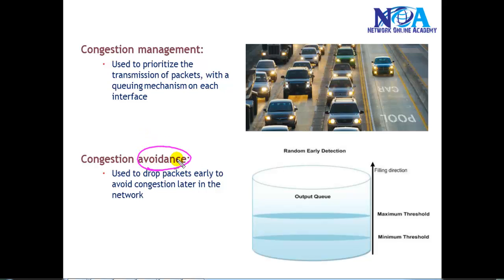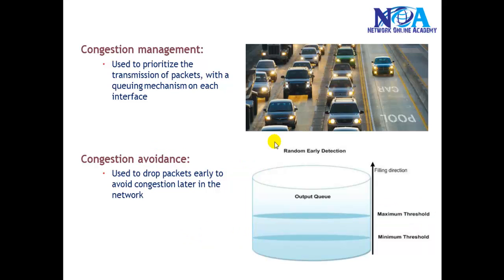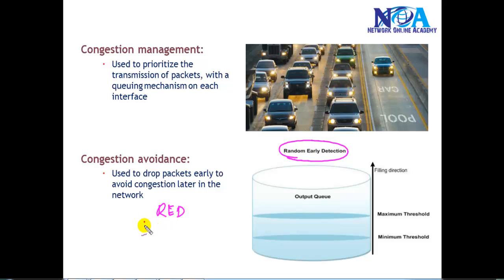There is one more mechanism called congestion avoidance. Before the network actually gets congested and reaches its limit and starts dropping packets, congestion avoidance randomly detects and drops low-priority packets before the maximum threshold is reached. We have mechanisms called RED (Random Early Detection) and WRED (Weighted Random Early Detection), which are congestion avoidance mechanisms that drop packets before the network gets fully congested.